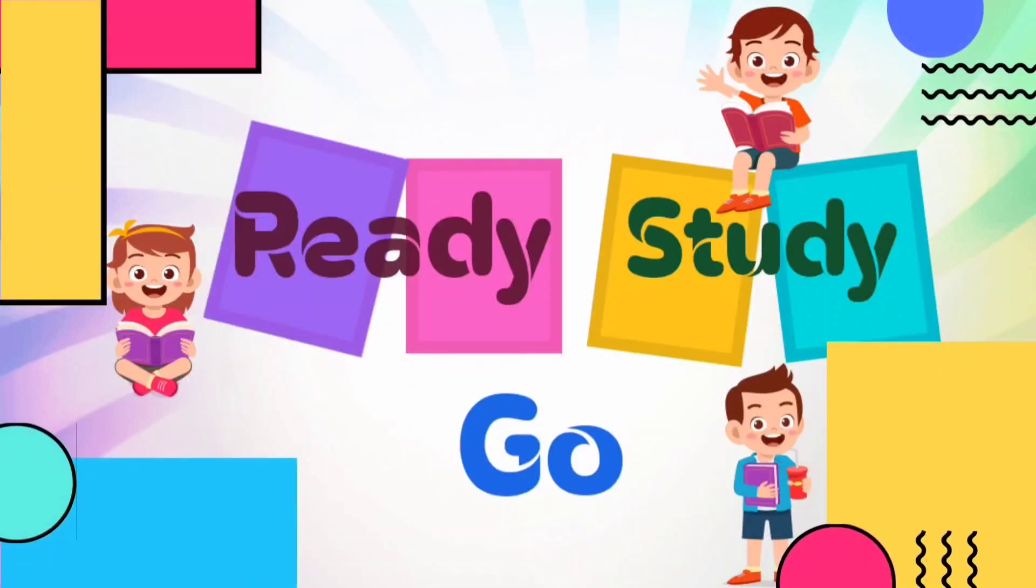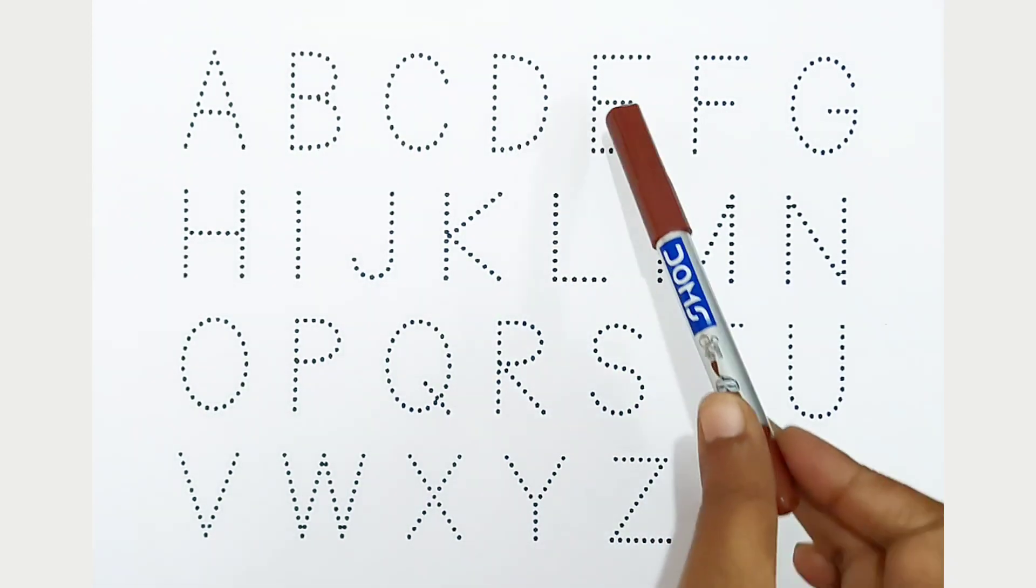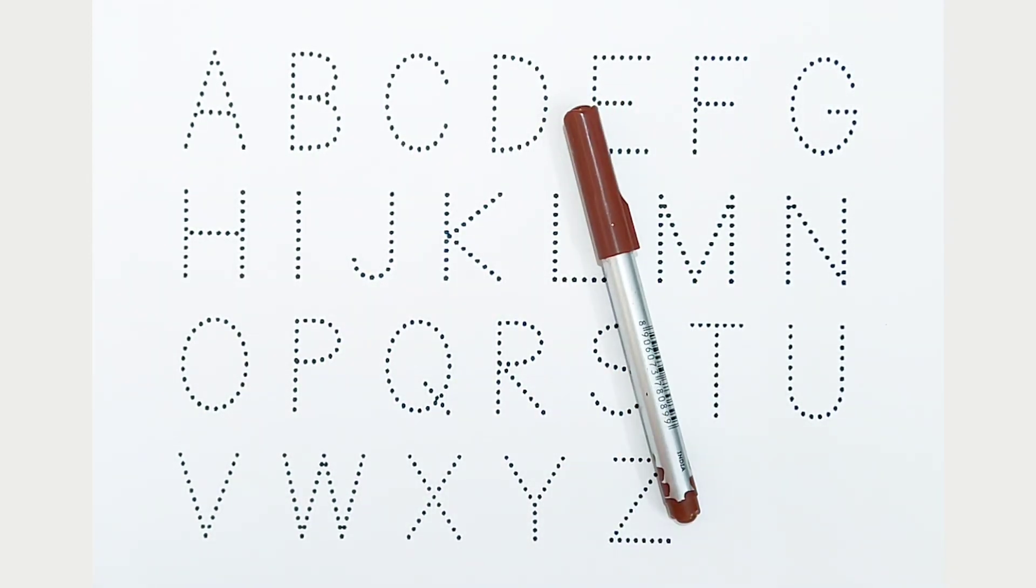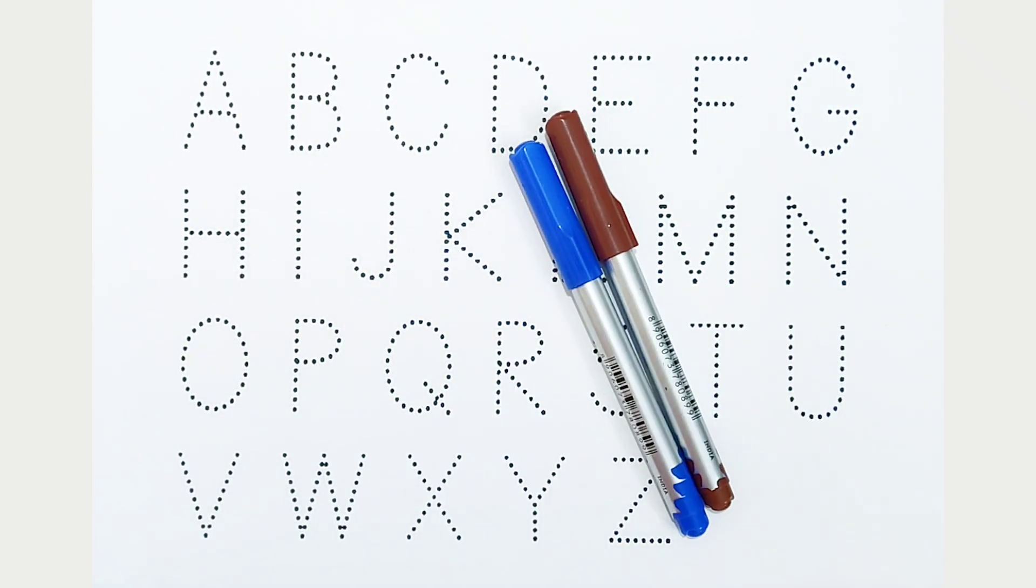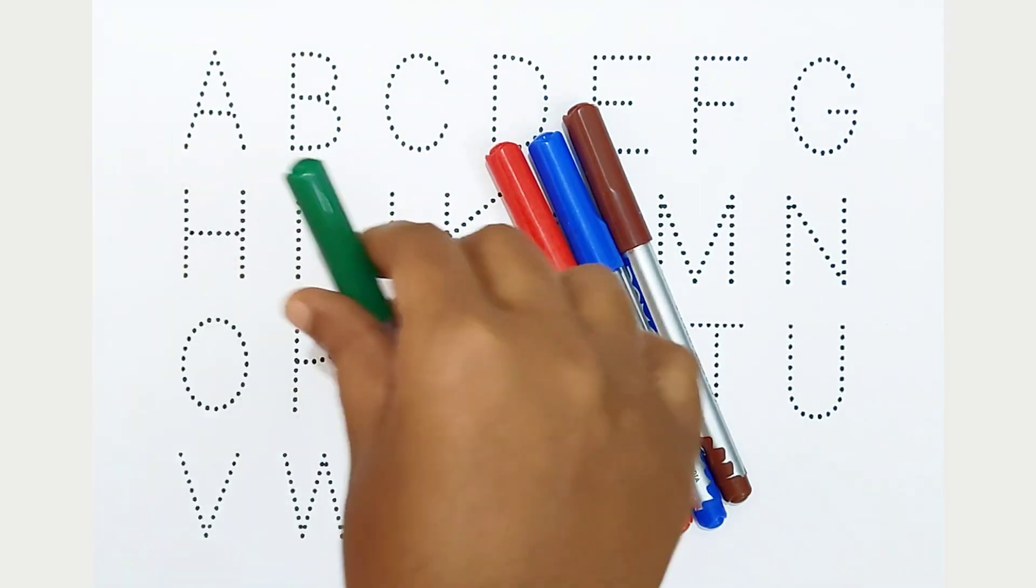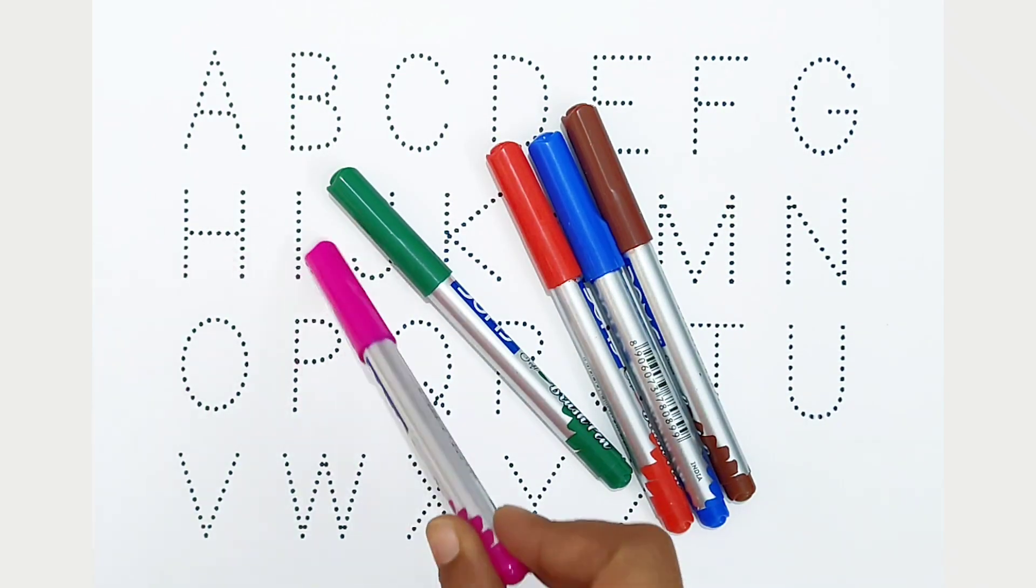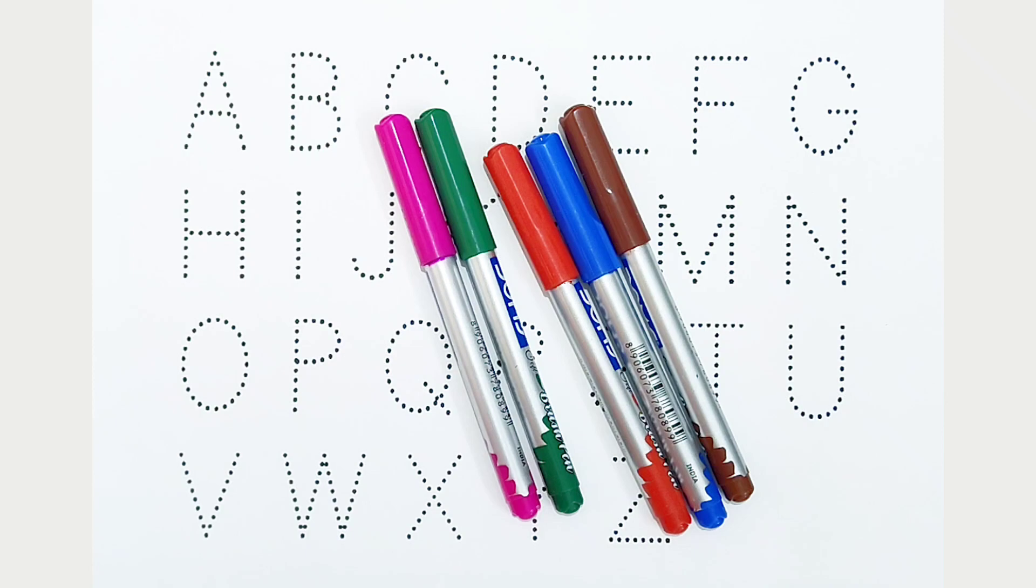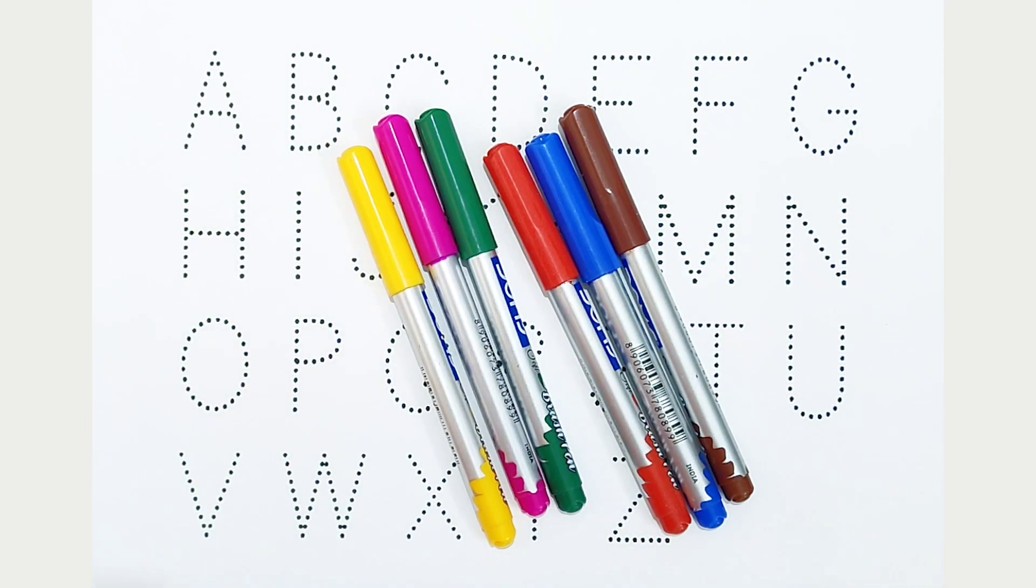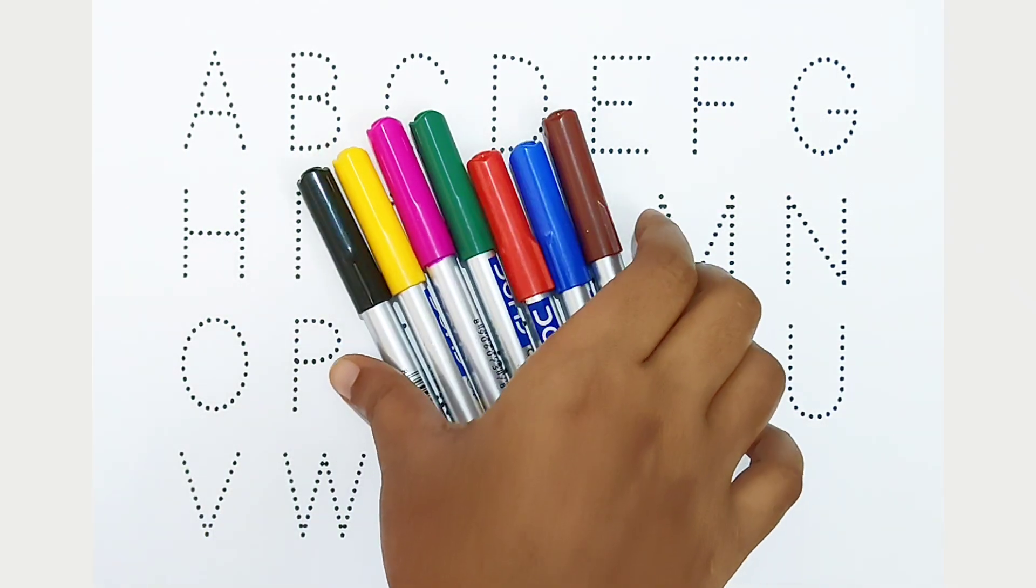Ready, study, go! Brown color, blue color, red color, green color, pink color, yellow color, black color. Hi kids! Today we can learn the alphabets from A to Z.